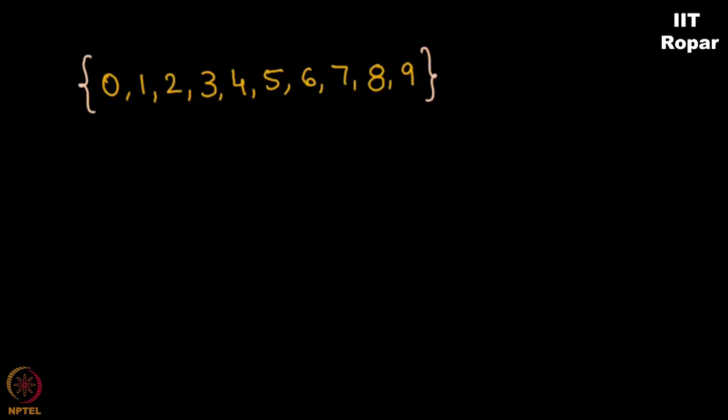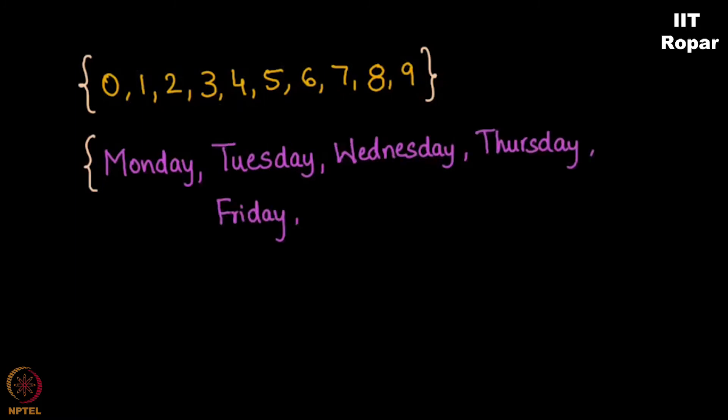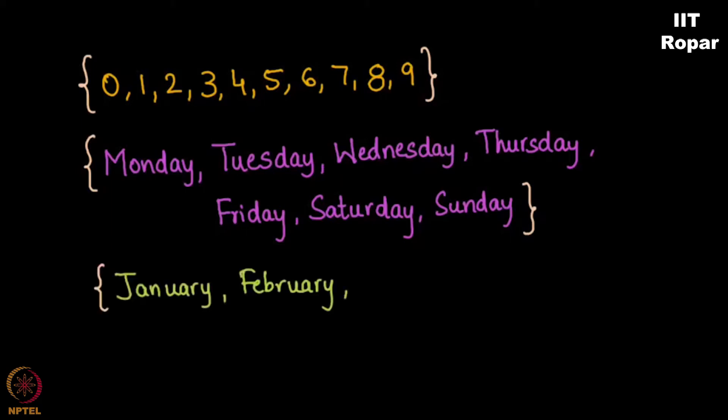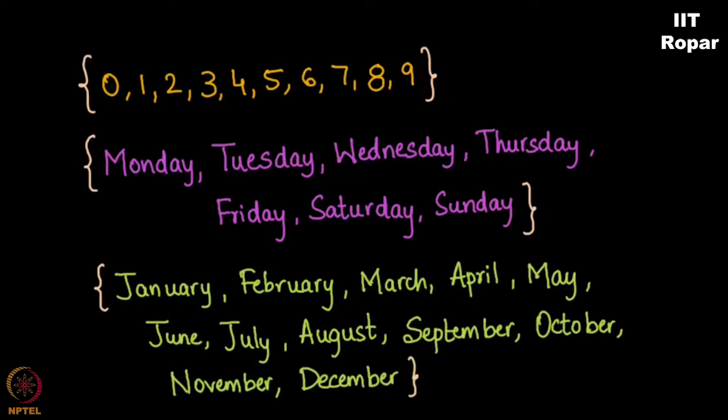10 of them, right. Let me consider all days of the week, which happens to be Monday, Tuesday, Wednesday, so on up to Saturday, Sunday. Let me consider the months of the year: Jan, Feb, March, April, so on up to December.